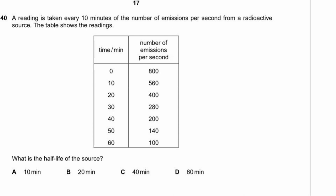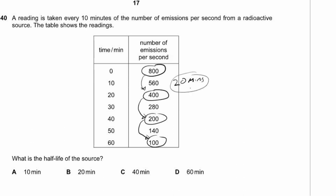Question 40. A radioactive source starts at 800 emissions per second. It drops to 400 after 20 minutes, then to 200 after another 20 minutes, then to 100 after another 20 minutes. The time to drop to half the original value is 20 minutes. The half-life is 20 minutes. The answer is B.